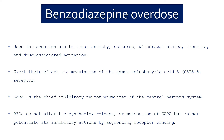Benzodiazepines exert their effect via modulation of the GABA-A (gamma-aminobutyric acid A) receptor. GABA is the chief inhibitory neurotransmitter of the CNS. Benzodiazepines do not alter the synthesis, release, or metabolism of GABA, but rather potentiate its inhibitory action by augmenting the receptor binding — that is how benzodiazepines work.